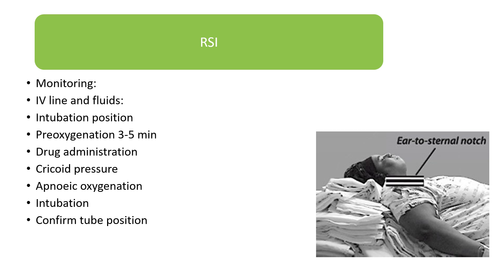For rapid sequence induction, your induction agent can be propofol or etomidate. Rocuronium should be used if there is a history of suxamethonium apnea or any other contraindication to suxamethonium. Wait for fasciculations after suxamethonium and then intubate. If using rocuronium, use the RSI dose of 1 to 1.2 milligrams per kilogram, wait one minute, then intubate. There will not be any fasciculations.